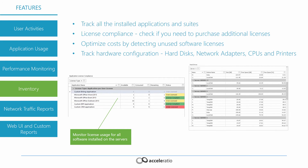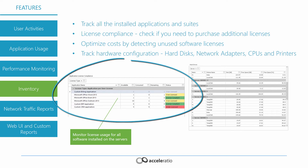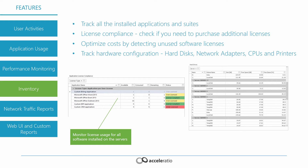Hardware and Software Inventory allows you to track remote desktop services and Citrix licenses, how many devices are connecting to your farm, how many users there are, how many office licenses you have and are using, and for nearly any other application you can configure license usage. Hardware Inventory allows you to see programs installed on the servers, hardware configuration, printers, etc.